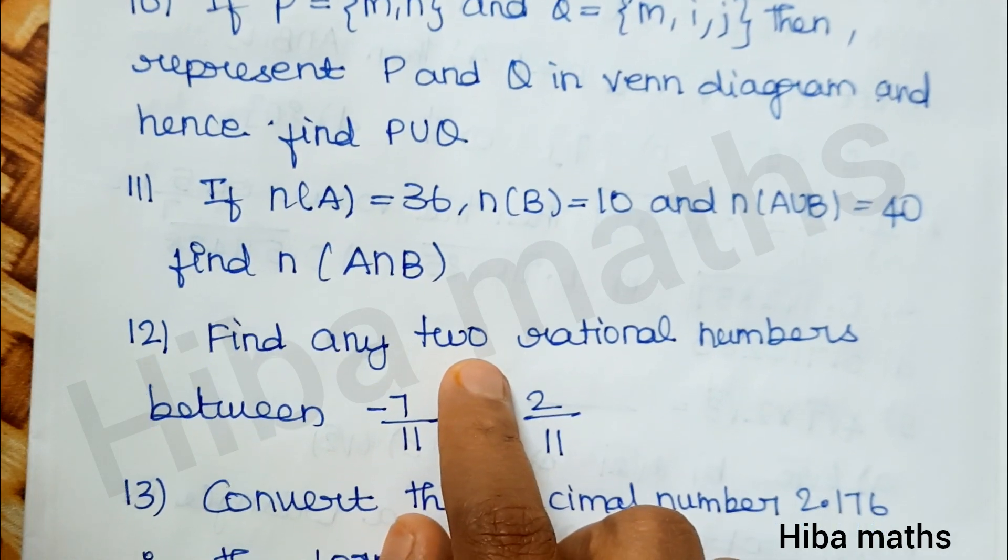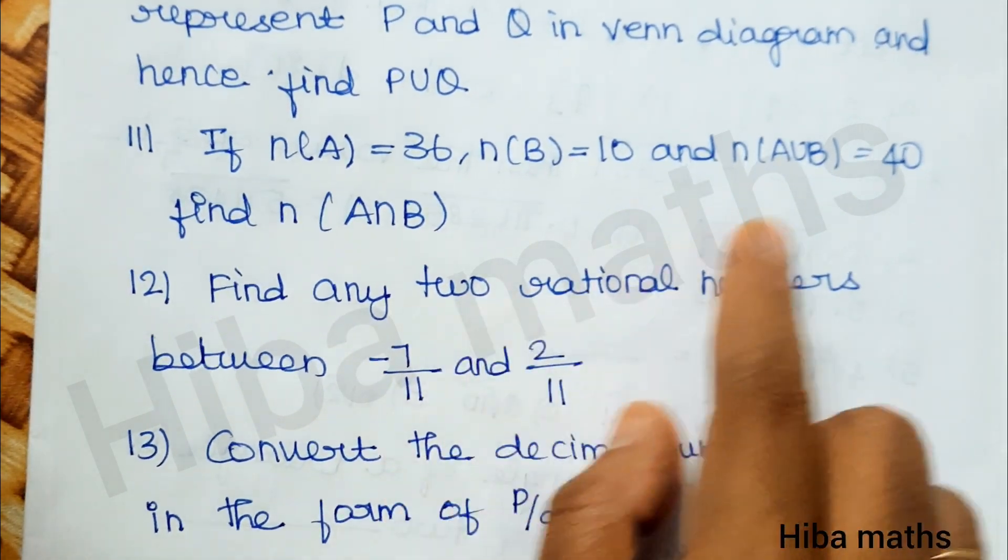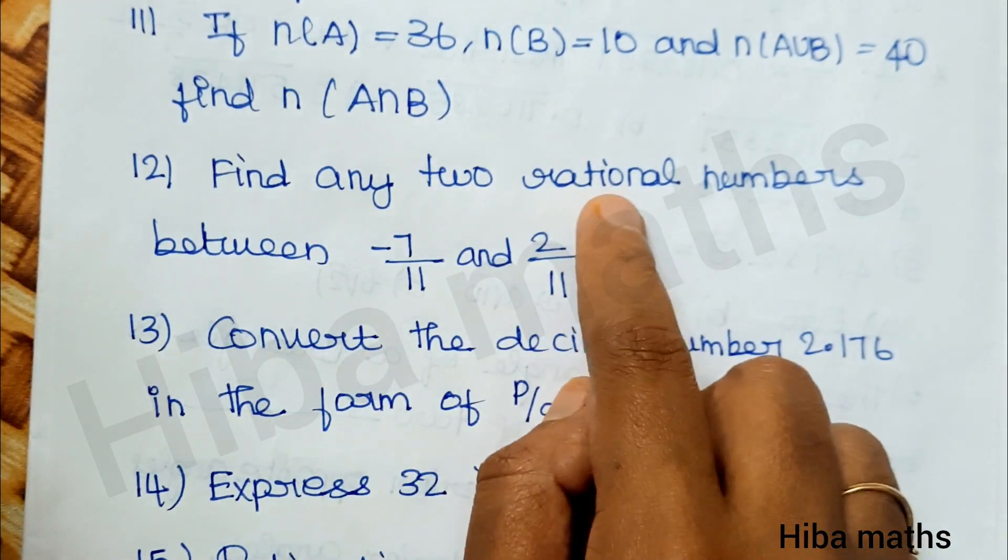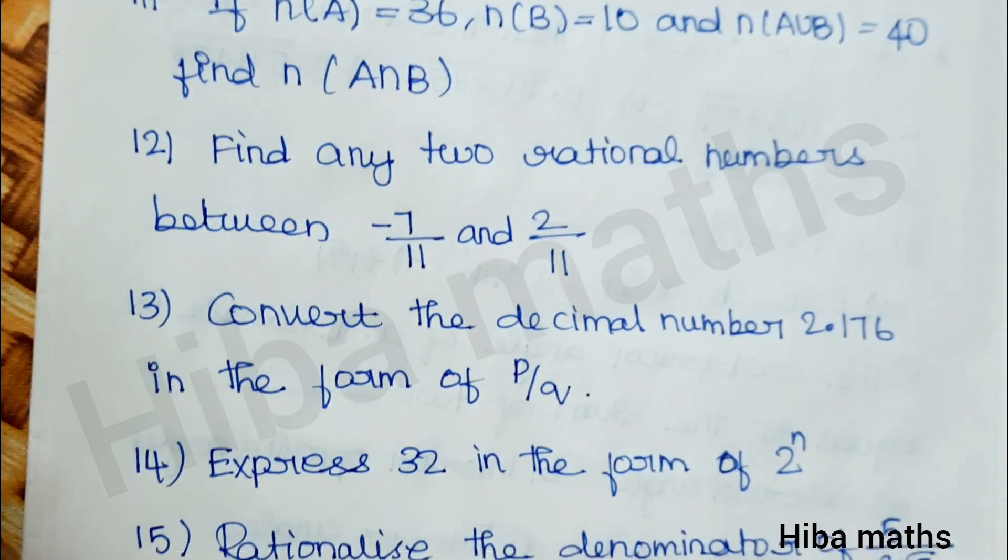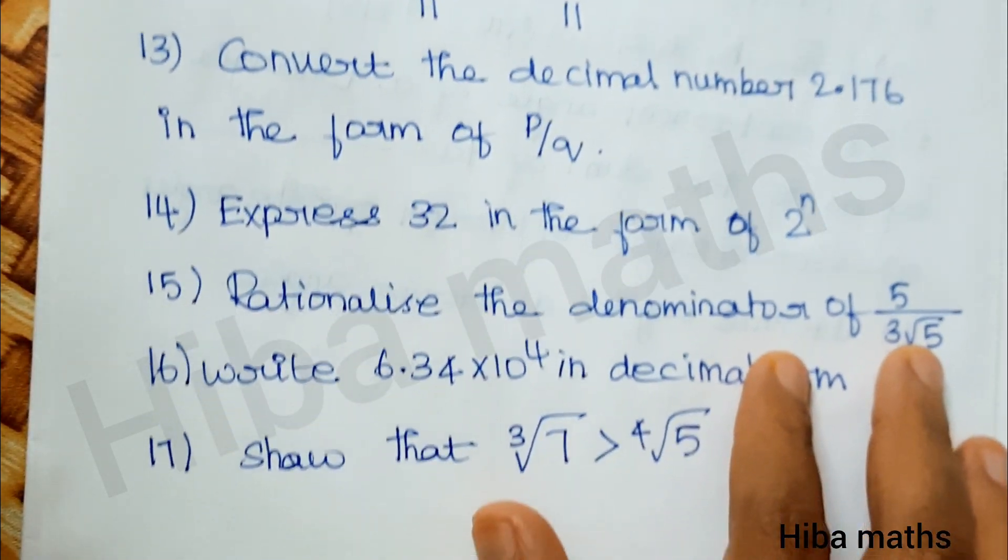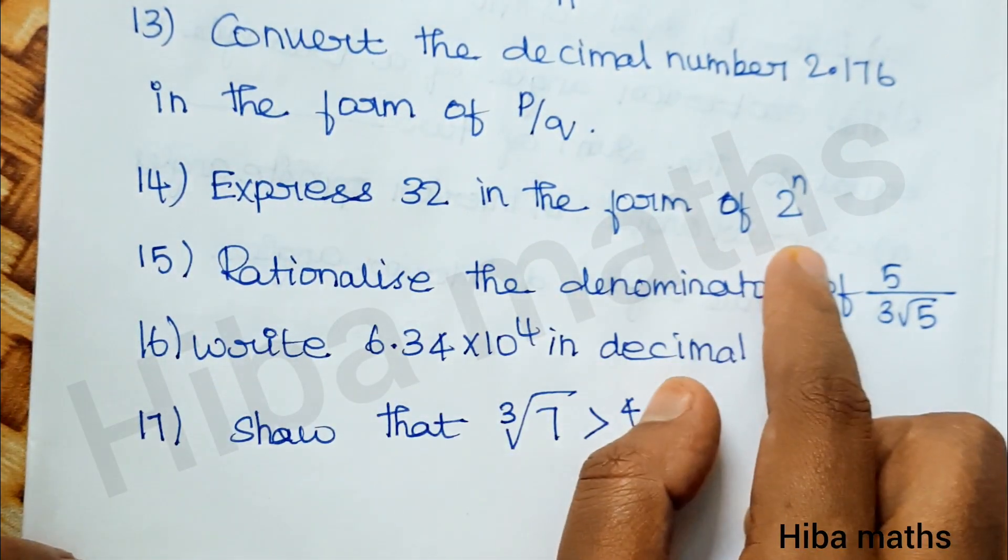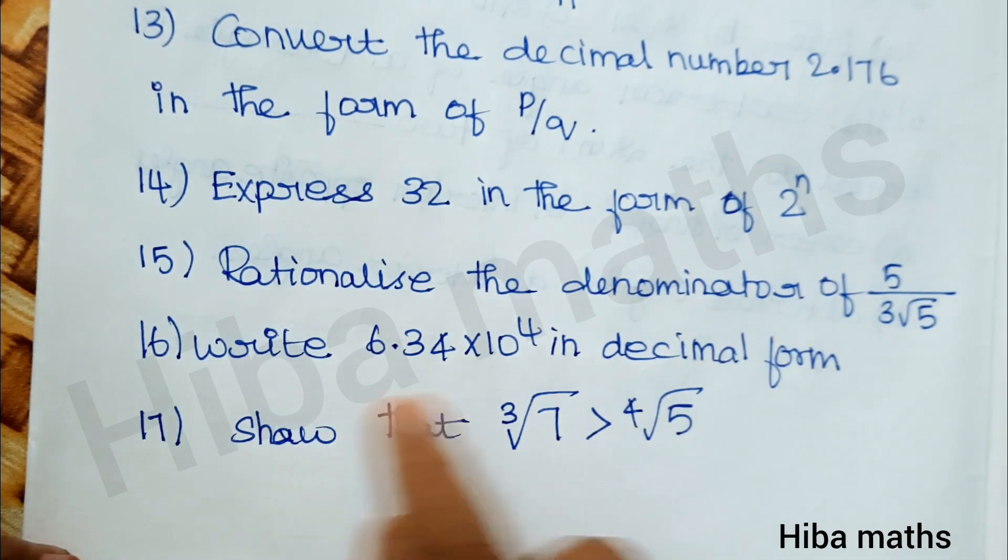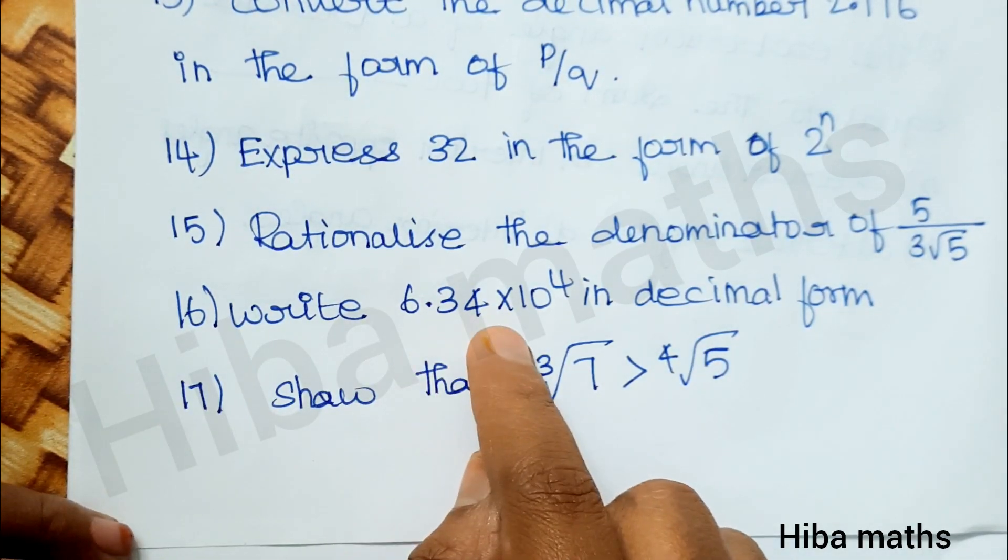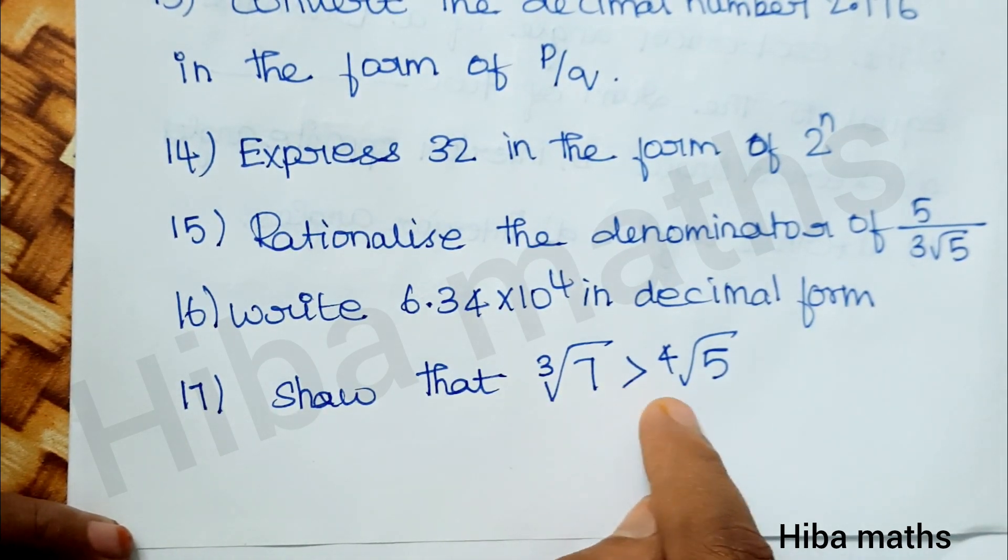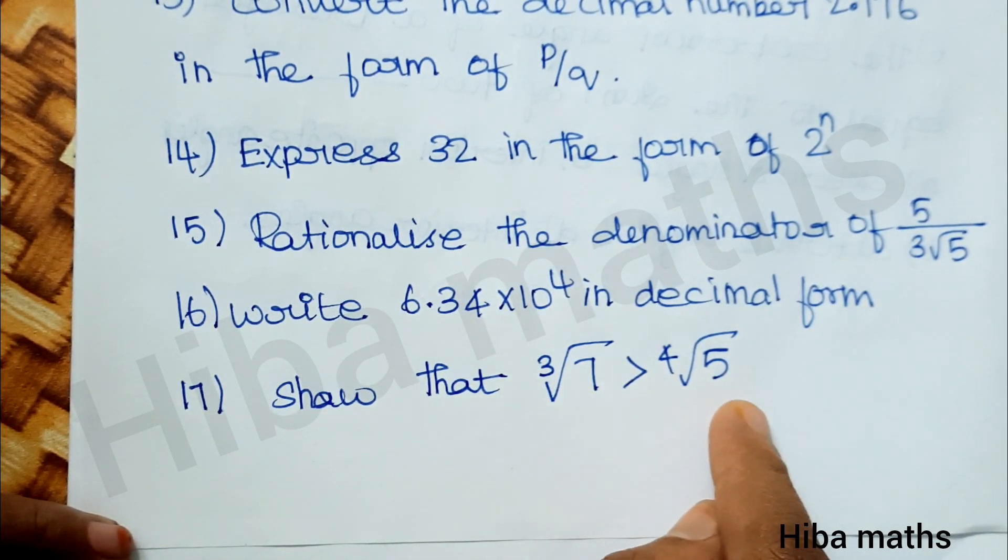More questions: If we add A and B - A union B, A intersection B. Convert the decimal number in the form of p by q. Express 32 in the form of 2 power n. Rationalize the denominator of 5 by 3 root 5. Write 6.34 times 10 power 4 in decimal form. Show that cubic root of 7 is greater than 4th root of 5.